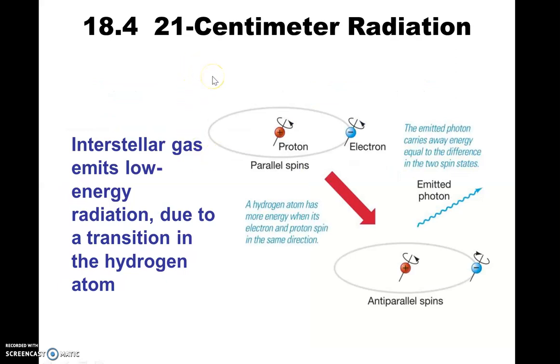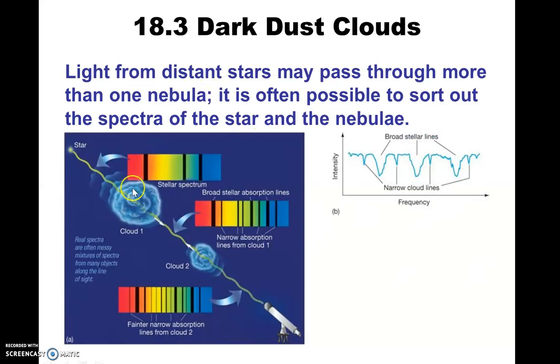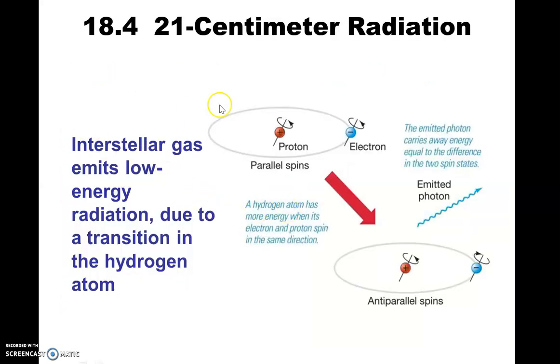All right, so what about a situation where there isn't a particularly bright star behind this cloud? How can we detect clouds just out there in the galaxy with not a particularly bright star behind them? So there turns out to be a method that's in the radio region, and it comes from quantum mechanics.